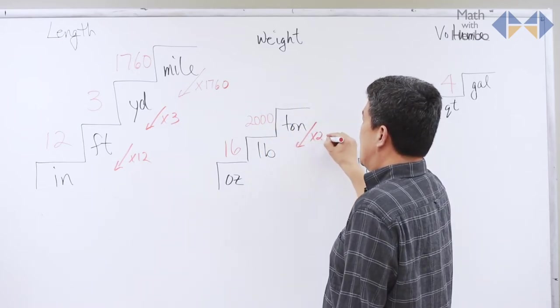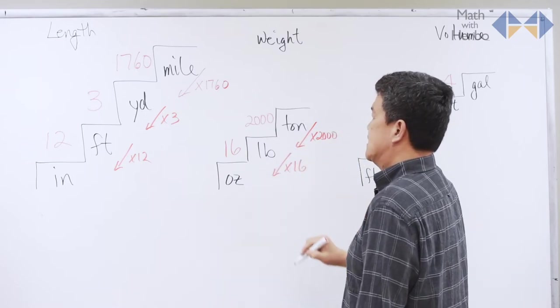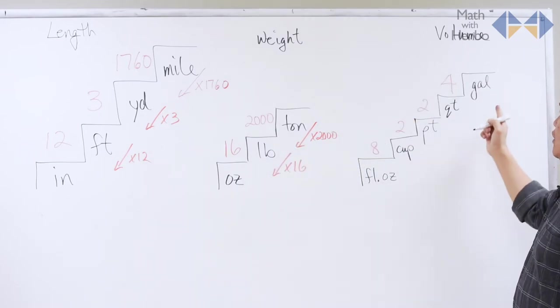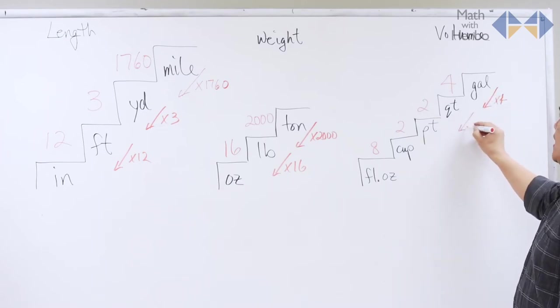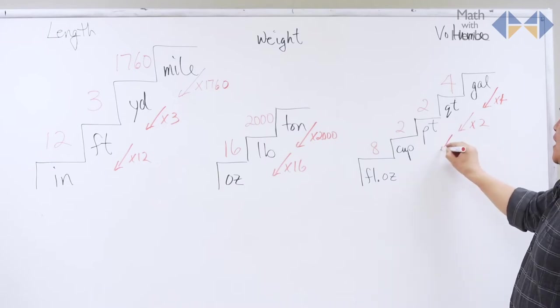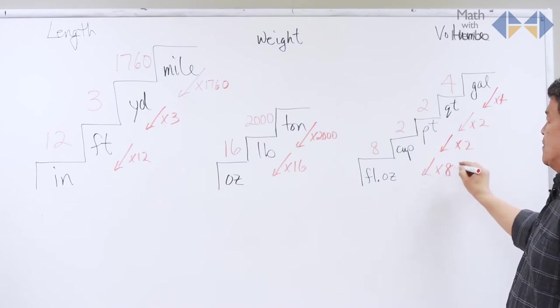Ton to pounds, multiply by 2,000. And pound to ounces, multiply by 16. Similarly here, gallon to quart, multiply by 4. Quart to pint, multiply by 2. Pint to cup, multiply by 2. And cup to fluid ounces, multiply by 8.